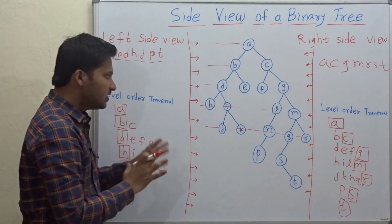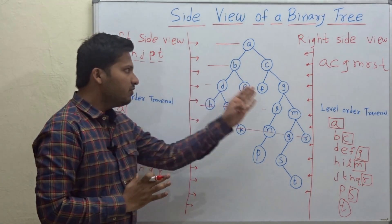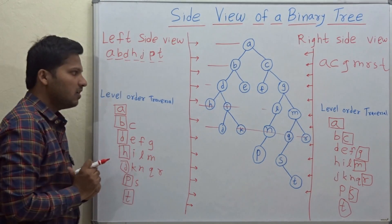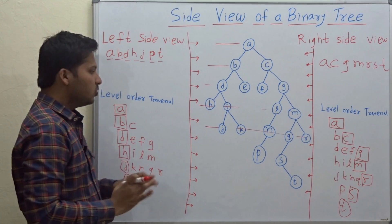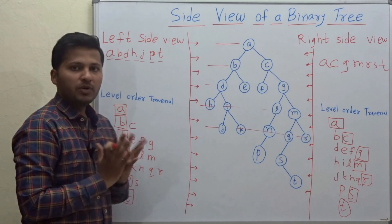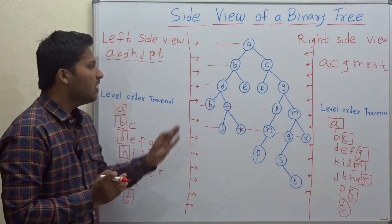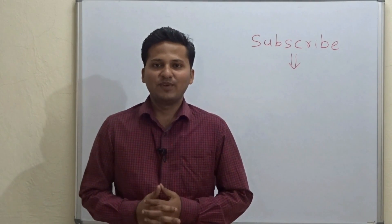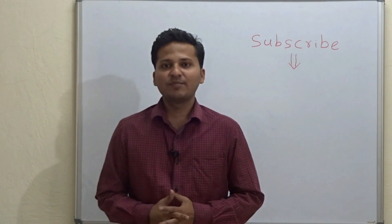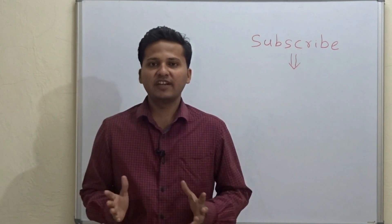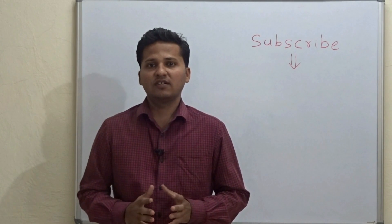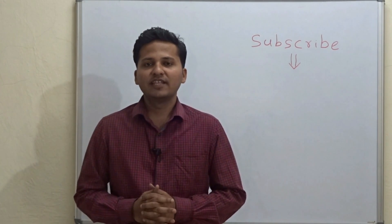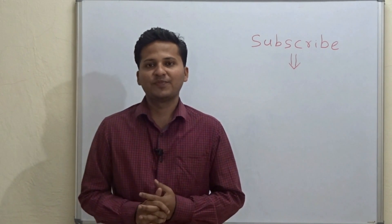This is how we print the side views of a binary tree. For level order traversal, as I mentioned before, you can see my previous video to perfectly understand this algorithm. Please subscribe to my channel as I post algorithm videos every day, and if you want a video on any particular topic, please mention it in the comments below. Thank you.